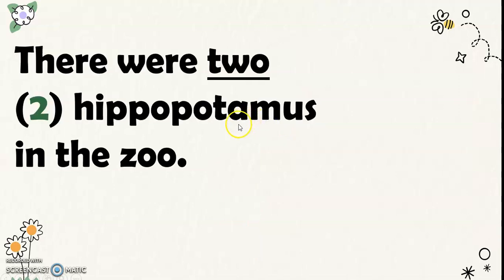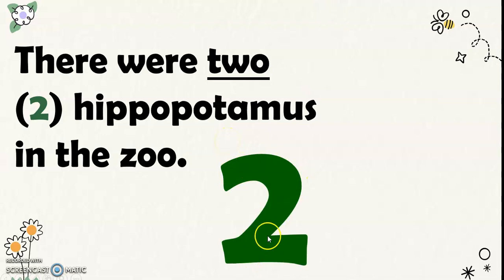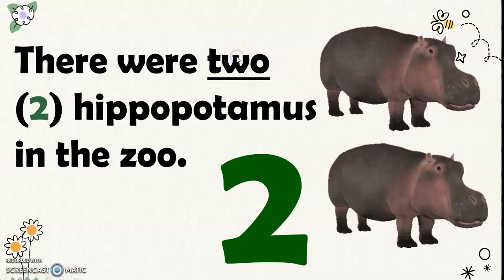Next, there were 2 hippopotamus in the zoo. This is the number symbol for 2, and this is the word for number 2. So, there you go, the 2 hippopotamus.